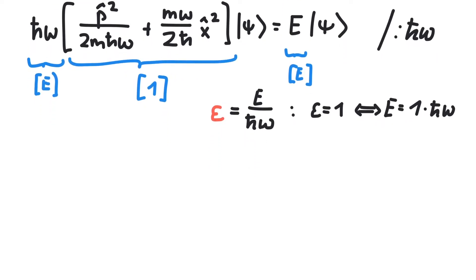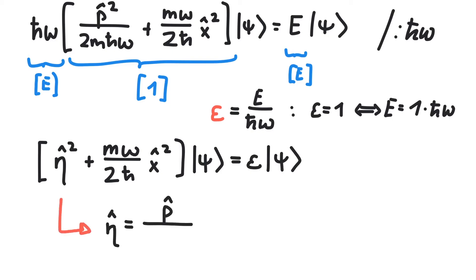Next, let's define a dimensionless momentum operator, call it eta. We would like to write the Schrödinger equation in the following way, which means that eta has to equal the momentum operator divided by this square root.